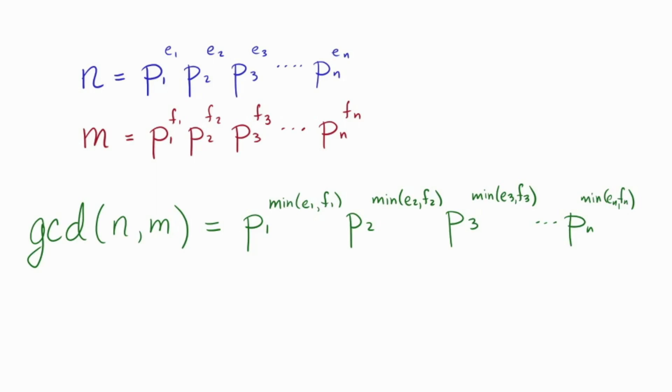The idea here is that if there are, for example, three 11s in n and five of them in m, then they have three in common, the minimum of three and five. That's how many they share. That's how many are in the gcd. That's the exponent that I put on that prime in the notation.